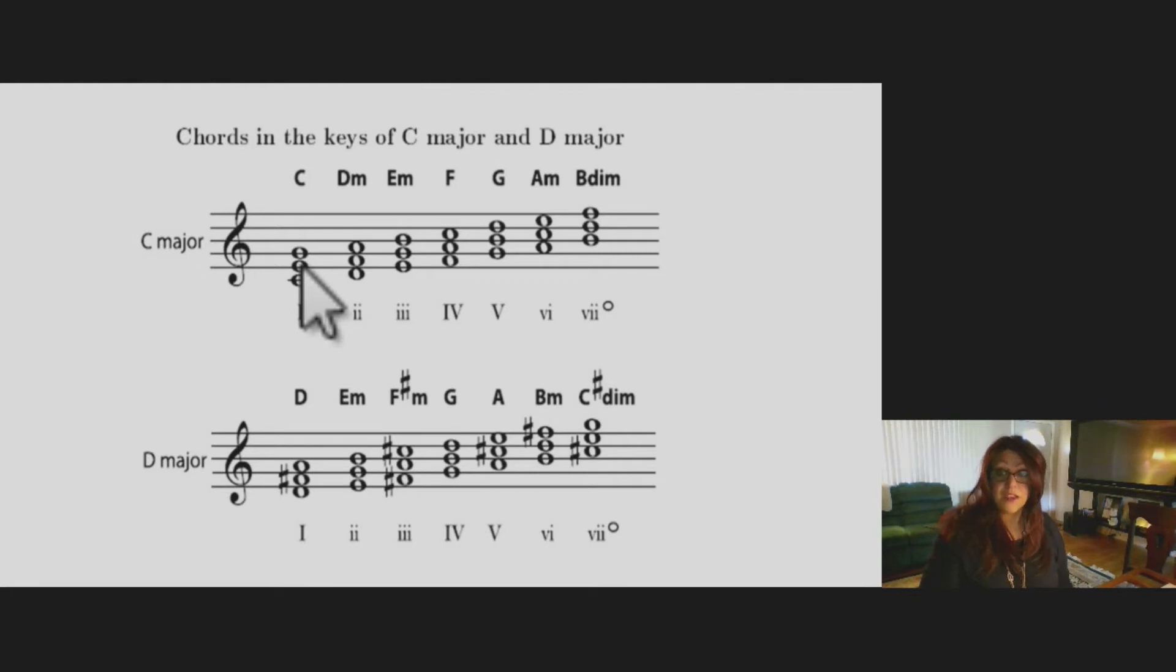Okay, now if you look at the second scale degree, the chord that's built off the second scale degree, that is a two chord and it's minor. So there you have D, F natural, and A natural. Do, mi, sol, mi, do. Great.